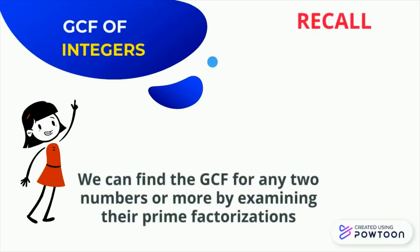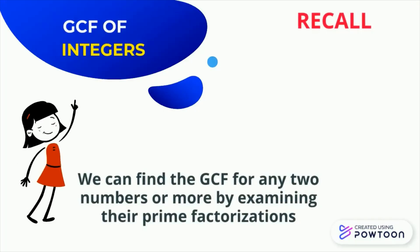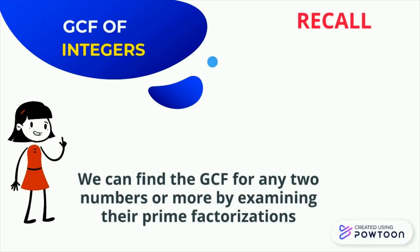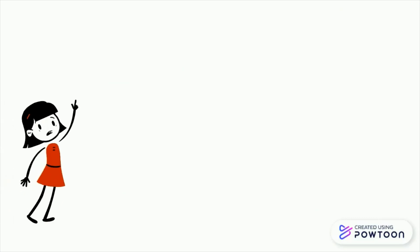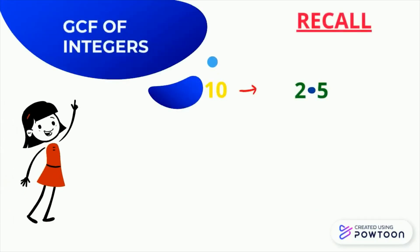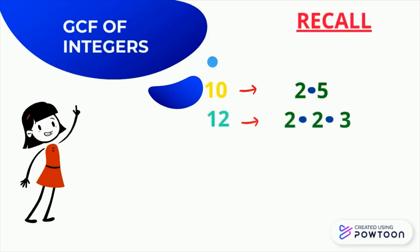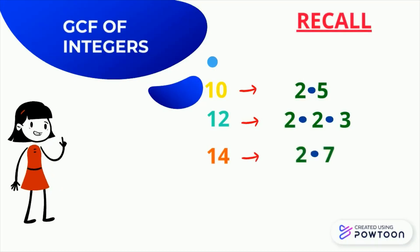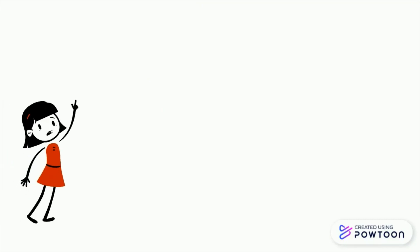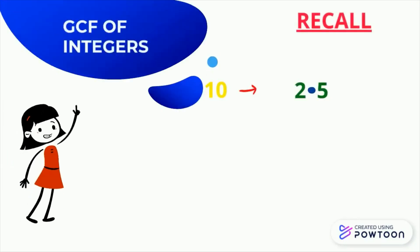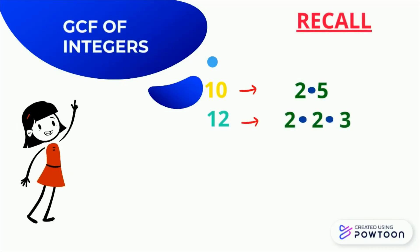We can find the GCF for any two numbers or more by examining their prime factorizations. For 10, prime factors are 2 and 5. For 12, 2 times 2 times 3. For 14, 2 times 7. What is the common integer in each of the given numbers? Observe that each has 2. Therefore, the GCF is 2.